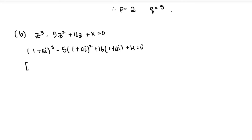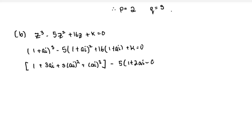Expanding (1 + ai)³ using the binomial formula: 1 + 3(ai) + 3(ai)² + (ai)³. Then expand −5(1 + ai)² = −5(1 + 2ai + a²i²) = −5(1 + 2ai − a²). Add 16(1 + ai) + k = 0.